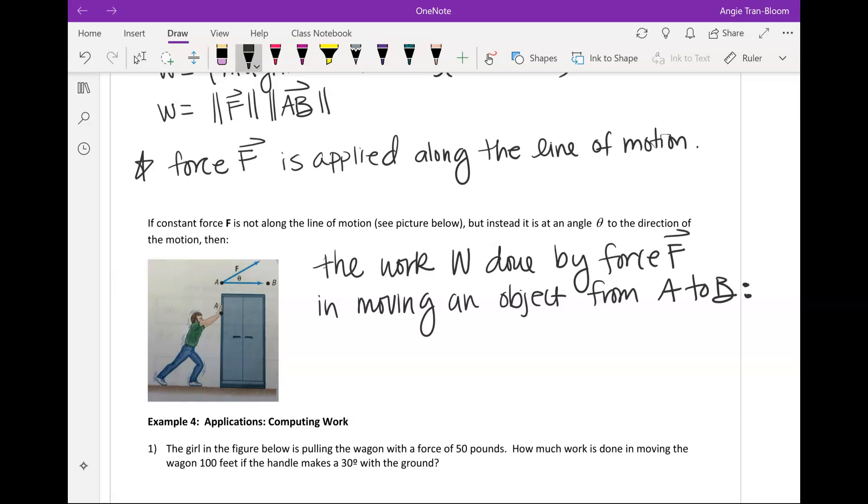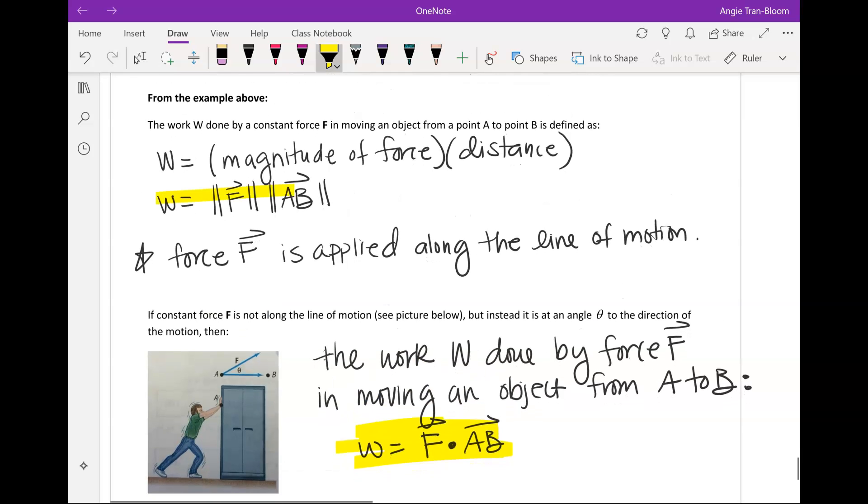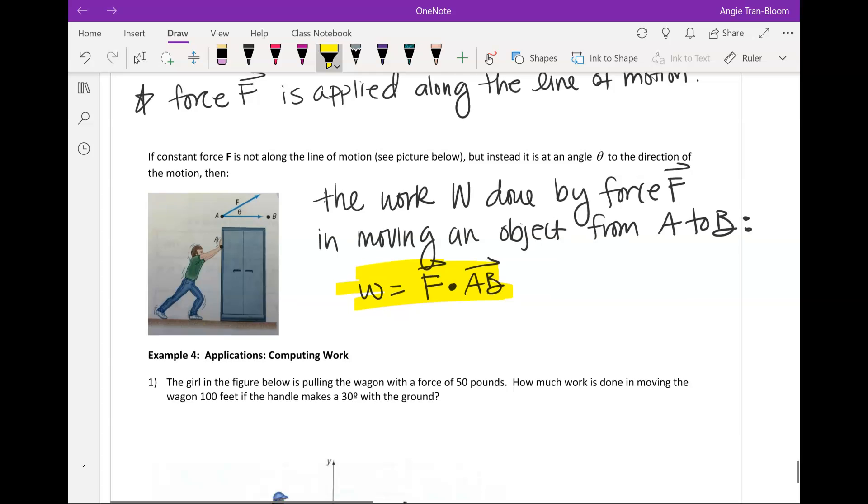And again, dot product of force to line AB. And again, dot product is not the same as multiplication. This formula is used when theta is not horizontal. This formula up here is used when you are moving an object horizontally.